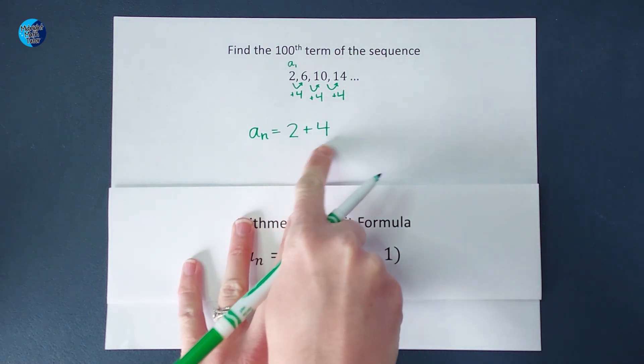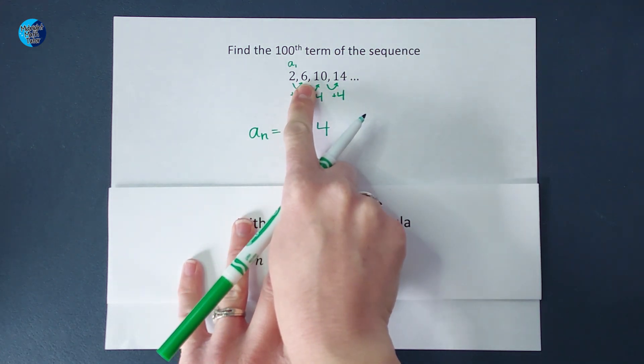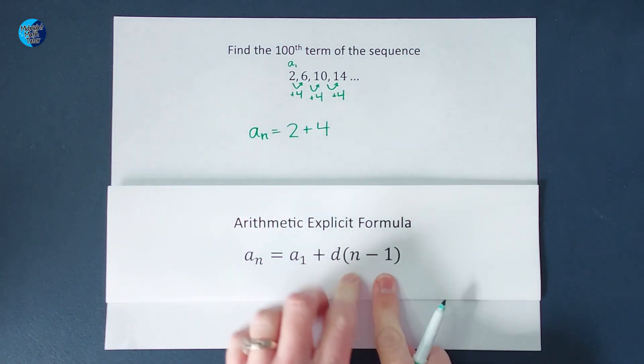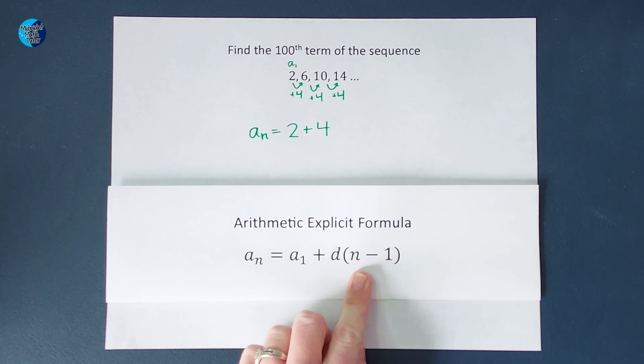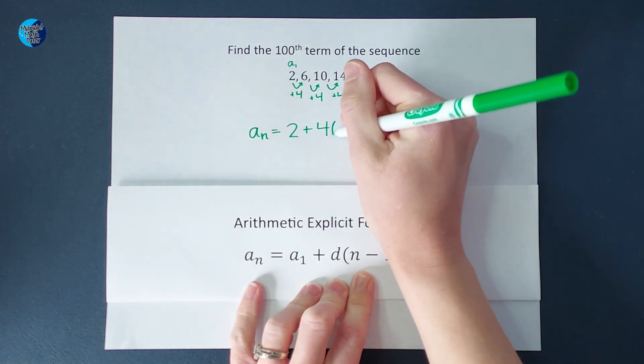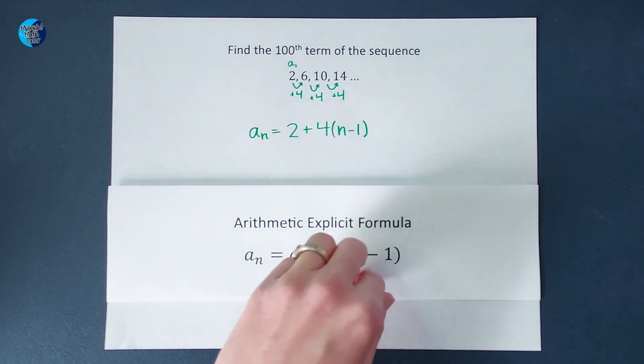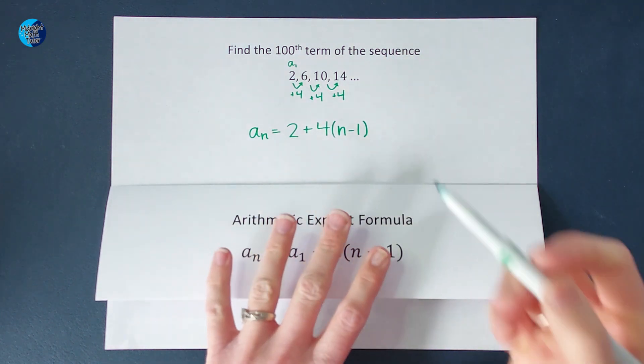So if I just did 2 plus 4, that gives me the second number, right? But what about the rest of the numbers? Well, that is where the n minus 1 comes in. We are going to multiply 4 by n minus 1. Now, why is that? I want you to look at this for a minute.